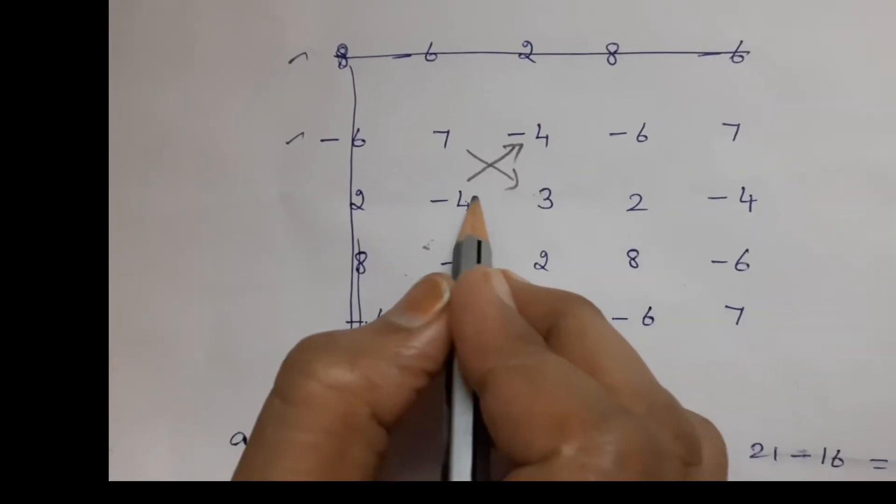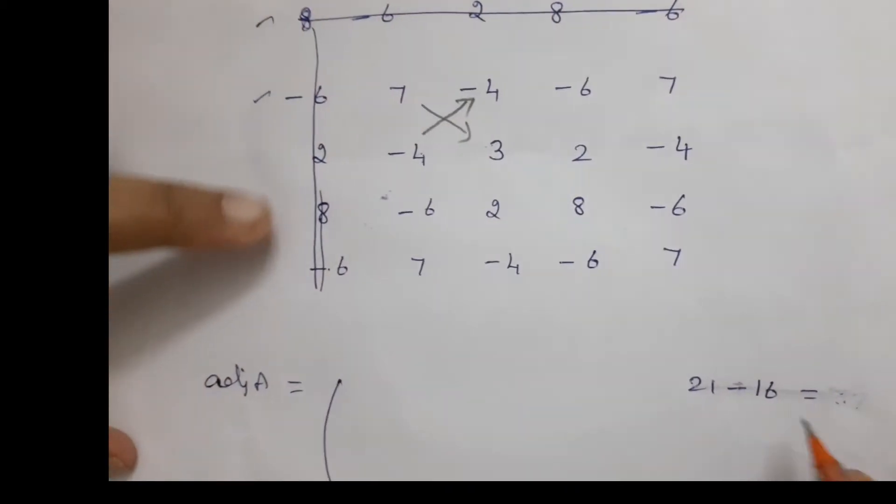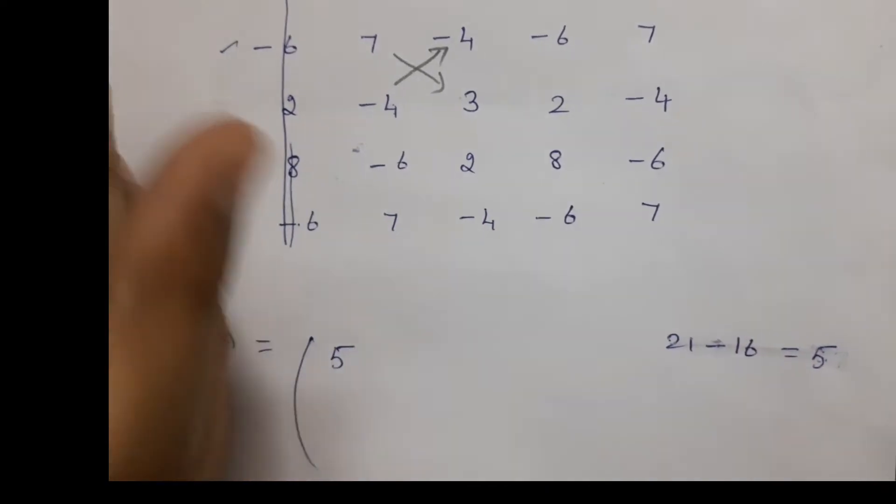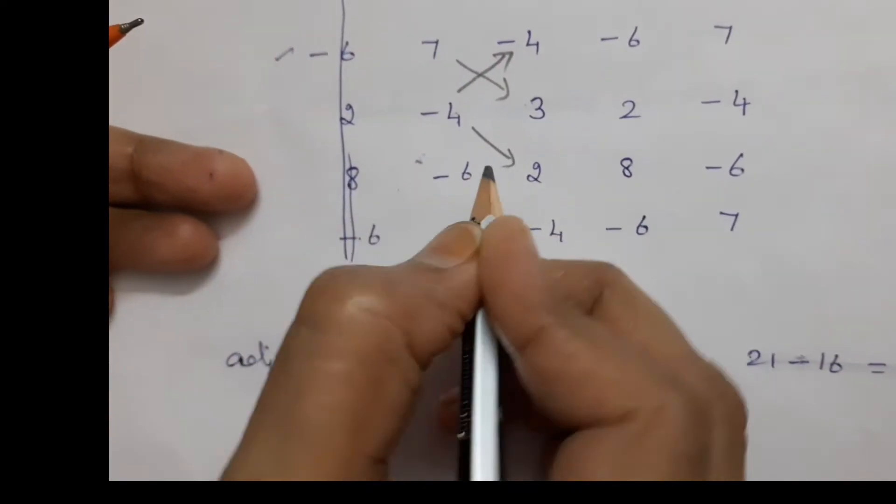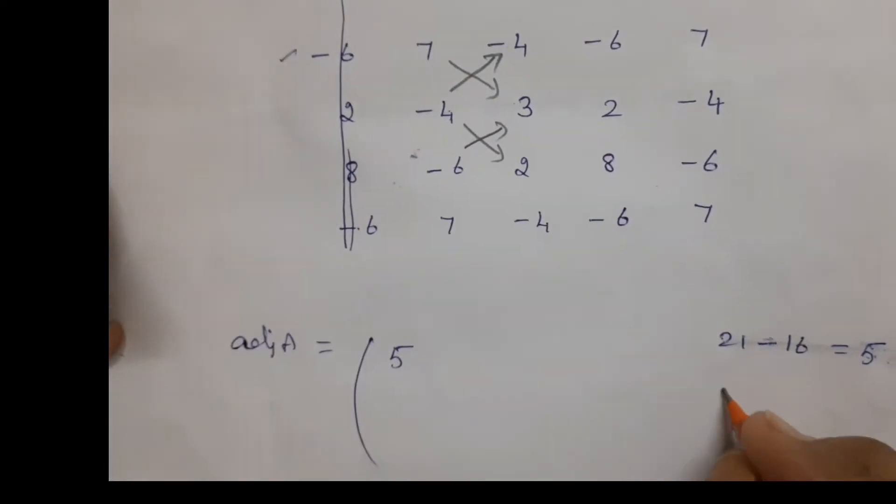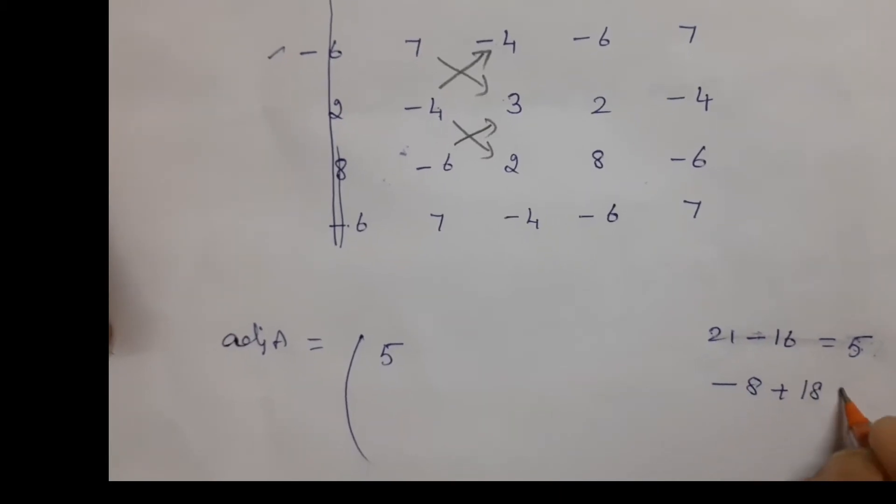7 times 3 minus 16. So 7 times 3 is 21, minus 16 is 5. Next one: -4 times 2 minus (-6 times 3). So -8 plus 18, that is 10.